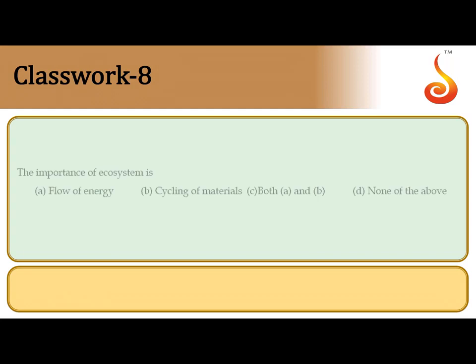The eighth question asks about the importance of an ecosystem. It includes both flow of energy as well as cycling of material, so the correct answer is option C — both option A and option B.